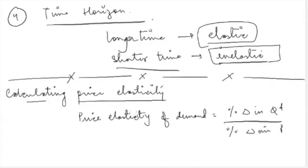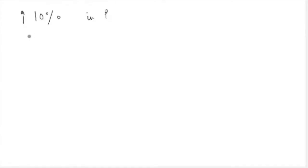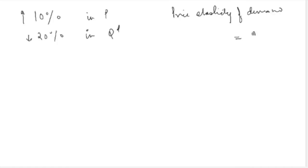Suppose there has been a 10% increase in the price of a commodity, because of which the demand for ice cream has fallen by 20%. If you have this data and you have to calculate the price elasticity of demand, then simply you will say that price elasticity of demand is 20 divided by 10, which equals 2. In this book we are not using the negative sign, but usually the price elasticity of demand is negative.